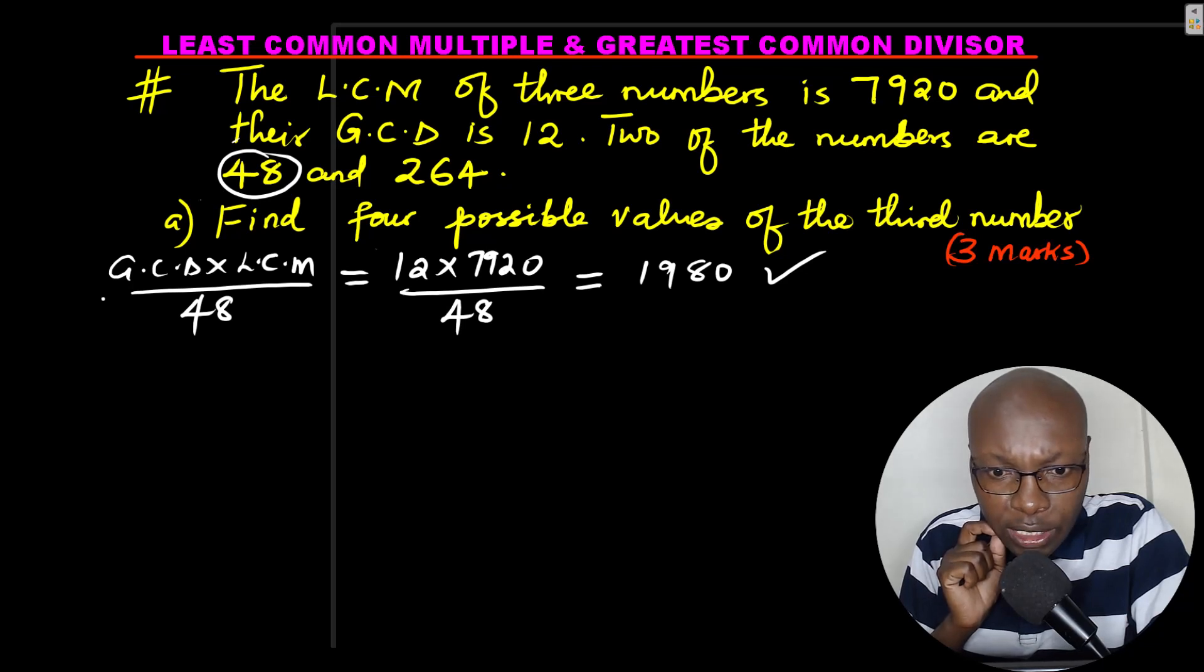Now you can try getting the LCM of 48, 264, and 1980. See that you get 7920. Then you can also try getting the GCD of 48, 264, and 1980. See that you get 12.